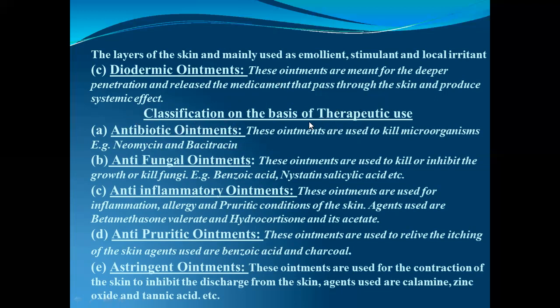Classification on the basis of therapeutic use — we can classify ointments into broad categories based on their active ingredients. Number one: antibiotic ointments. These are used to kill microorganisms, and the agents used as active pharmaceutical ingredients are antibiotics. Common examples are neomycin and bacitracin.